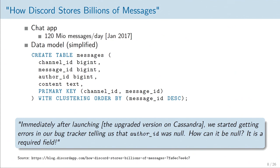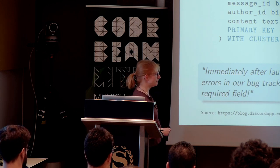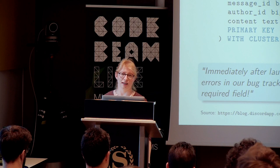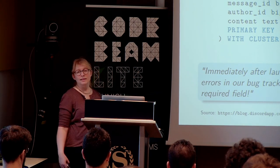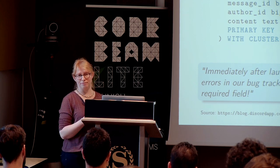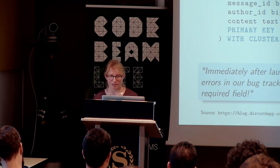They were upgrading their application to a new version of Cassandra and rewriting parts of the application. They described that they tested their stuff very thoroughly. Then it went online, and within a few hours — with 120 million messages per day, rare situations happen frequently — they saw errors in the bug tracker. People were complaining that for some messages the author ID was set to null. They had an invariant that the author ID would never be null — it was a required field. Whenever you entered a message, you needed to put the author ID in. So how on earth would null get in there?